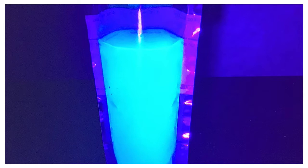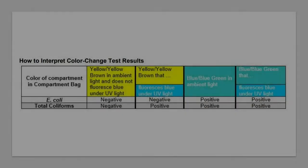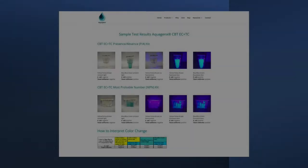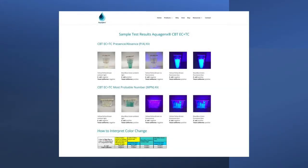Blue or blue-green that fluoresces blue under a UV light is positive for E. coli and positive for total coliforms. A color chart on how to interpret the color change in the thiobag is in the instructions for use. Images of test results also are on our website.